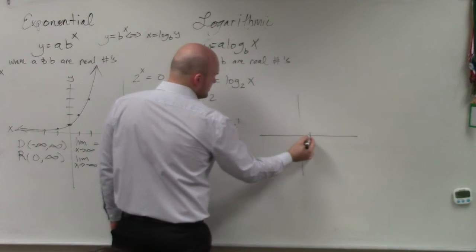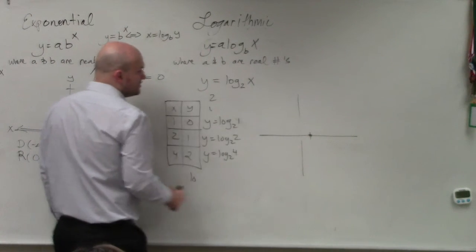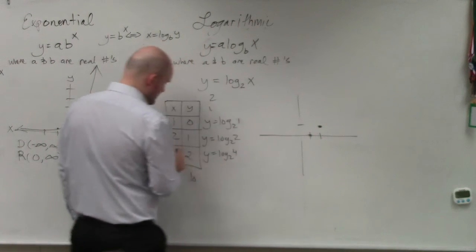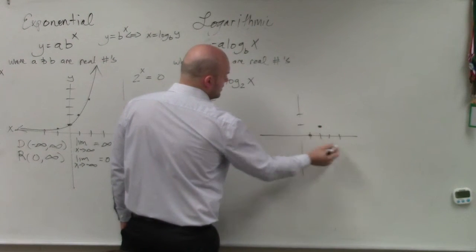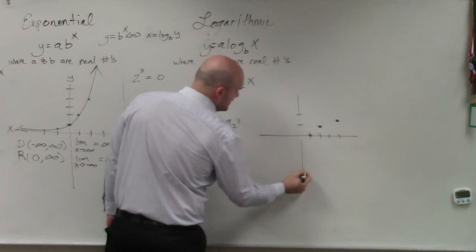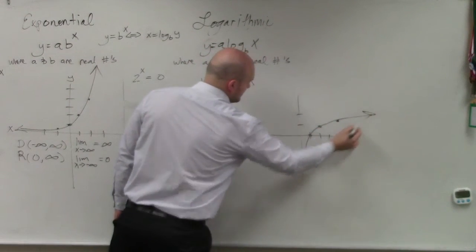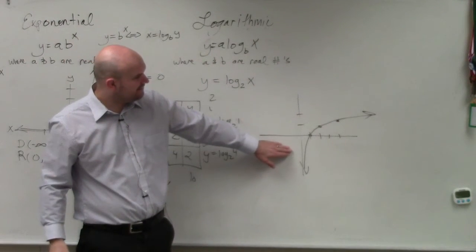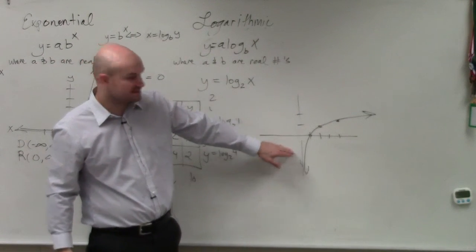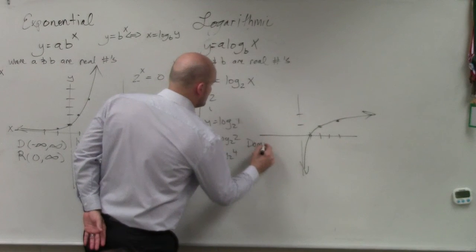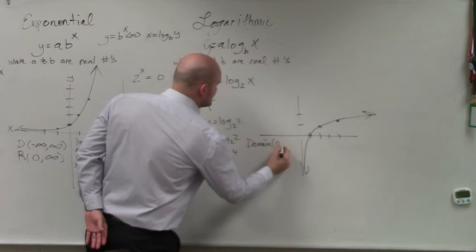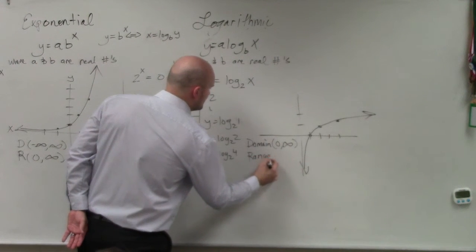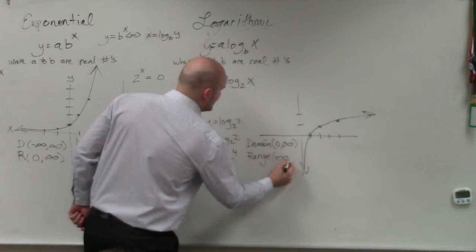So if we go to 1 comma 0, if we go to 2 comma 1, and then we go to 4 comma 2. What you'll see is you're going to have a function that's going to look like this. Therefore, our domain is from 0 to infinity, and our range is from negative infinity to infinity.